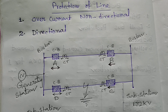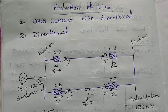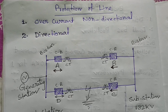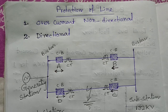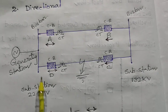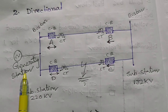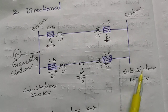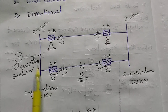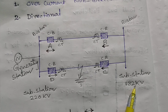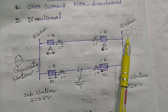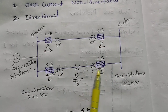Today's discussing topic is protection of line. A line is just an incoming or outgoing line from a generating station or from a substation. In our diagram we consider a 220KV switchyard of a generating station and a 132KV substation bus. From here we are giving the power to the 132KV substation by means of a double circuit line — incoming line one and incoming line two.